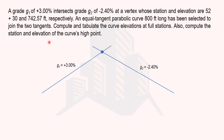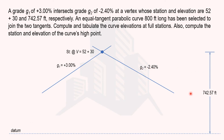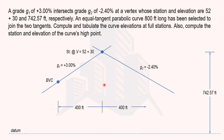The station at the vertex is 52+30, and the elevation of 742.57 feet represents the vertical distance from the datum up to the vertex point. This is an equal tangent parabolic curve with a total length of 800 feet, so the beginning point is 400 feet to the left of the vertex and the ending point is 400 feet to the right.